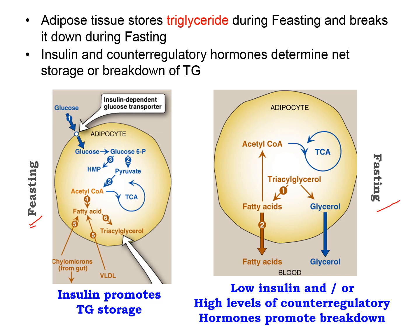During the feasting state, adipose tissue gets lipid supply from two different sources. One is from chylomicrons, which is a lipoprotein produced by your gut that transports dietary fats, while the second source is VLDL, or very low density lipoproteins, that transport fats from your liver. Upon arrival in the adipocytes, we need the enzyme lipoprotein lipase to break down these lipid molecules.